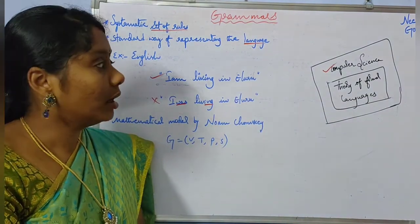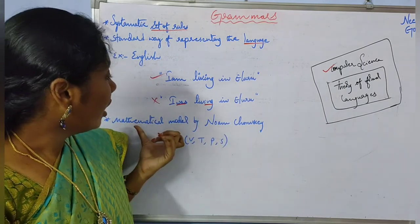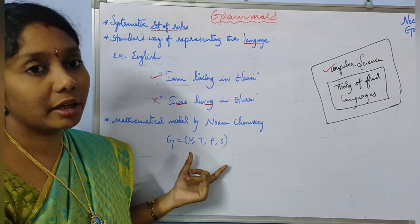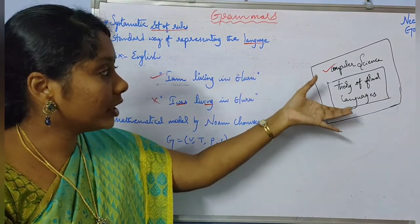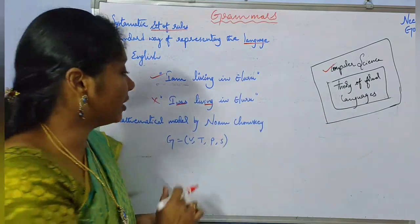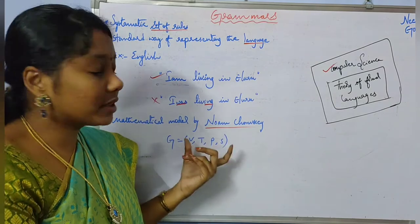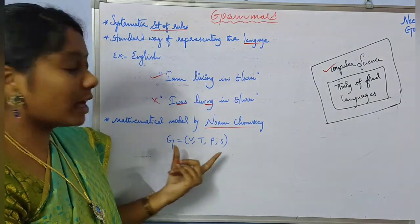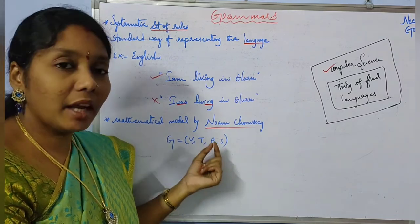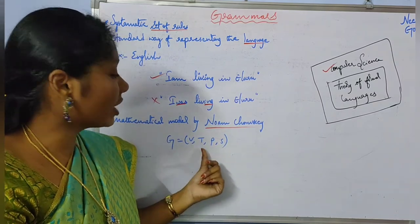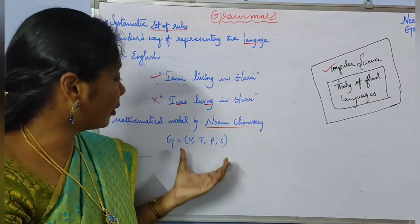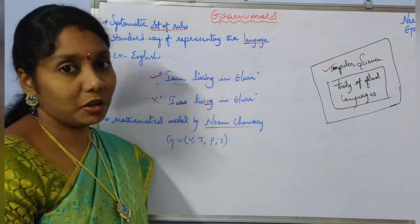According to Noam Chomsky, here is the mathematical form of a grammar. The grammar concept in computer science was introduced in a mathematical form. It consists of four parameters: V, T, P, and S — standing for Variables, Terminals, Productions, and Start Symbol.